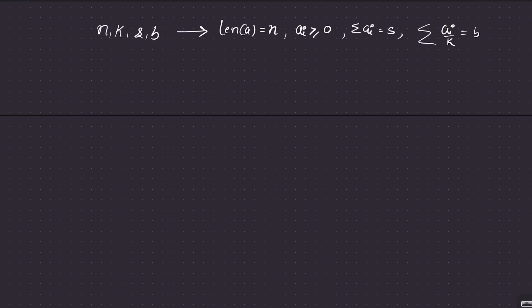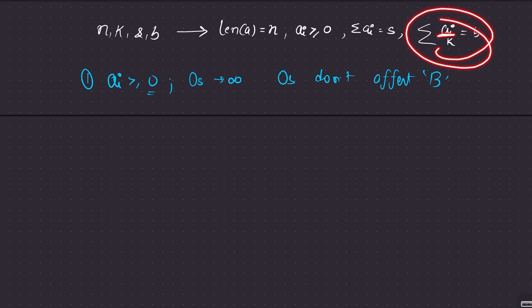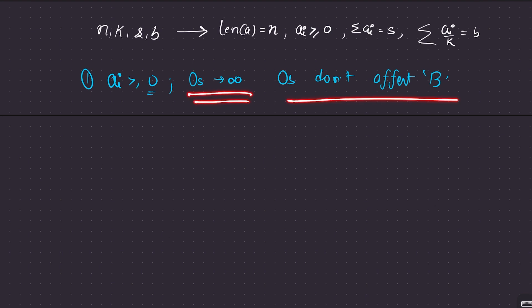Let's approach this question step by step. First observation: all elements have to be non-negative, greater than or equal to 0. So first thing that comes to mind is you have infinite supply of zeros. In other words, zeros are infinite — you can have as many zeros as you want. And why this observation is helpful is that zeros don't affect the value of beauty.